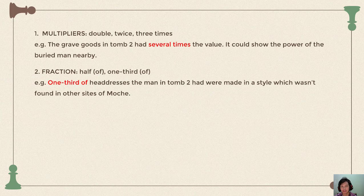The next predeterminer is fractions, which are similar to multipliers but involve dividing rather than multiplying. The word 'of' is optional here. Example: 'One third of the headdresses found in tomb 2 were made in a style which wasn't found in other sites of the Moje.'